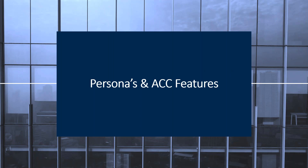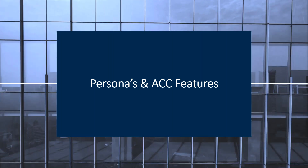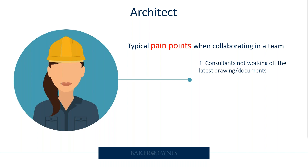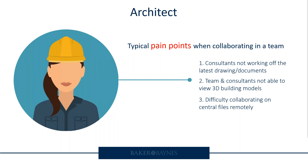We're going to have a look at the personas and what Autodesk Construction Cloud features they can use. Starting off with the architect — some typical pain points that architects experience when they need to collaborate in a team: consultants not working off the latest drawings or documents; teams and consultants not able to view 3D building models, especially if you've got non-Revit users; difficulty to collaborate on central files remotely, which was a huge issue especially during the first lockdown; and manual model coordination processes taking way longer and being bound to various errors.